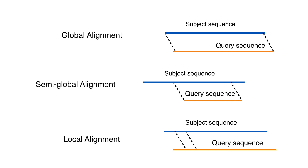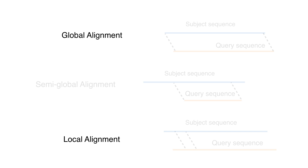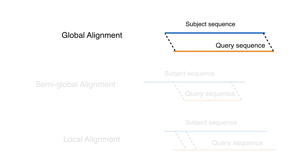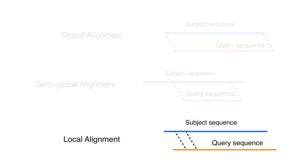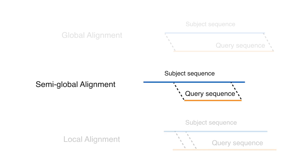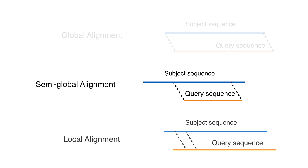Alignment problems were originally classified in two categories: global alignments and local alignments. A global alignment spans the entire length of a query and subject sequences. A local alignment identifies regions of similarity within long sequences that are overall dissimilar. The semi-global alignment problem can be viewed as a variant of global alignment in which one sequence is much shorter than the other — in such cases, aligning the entire length of the longer sequence does not make much sense. However, unlike the local alignment, the semi-global alignment takes the whole shorter sequence, not one of its sub-sequences.